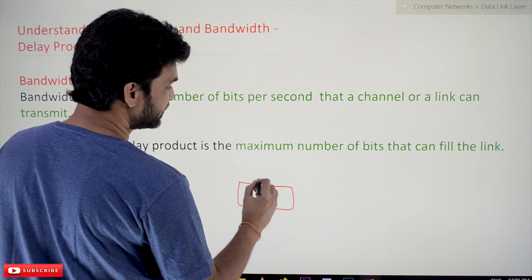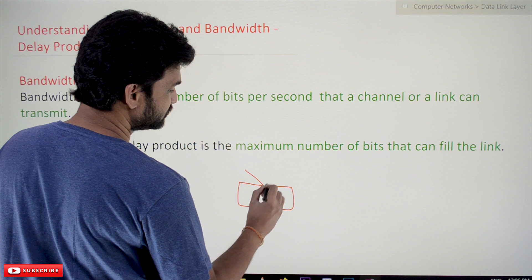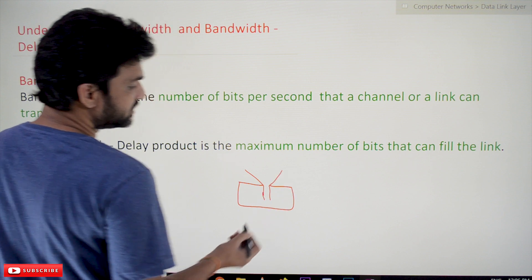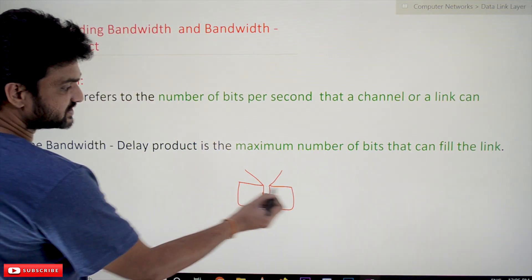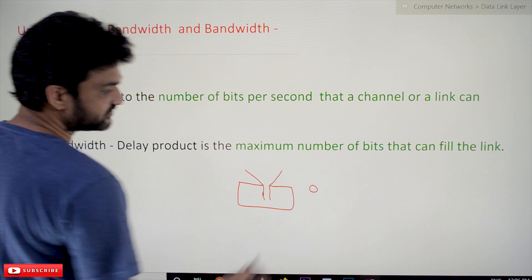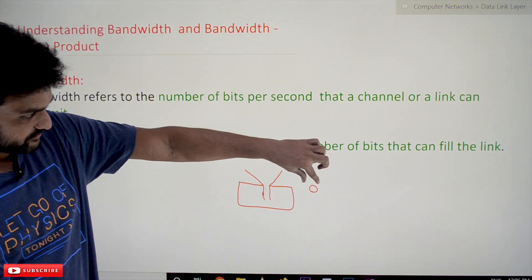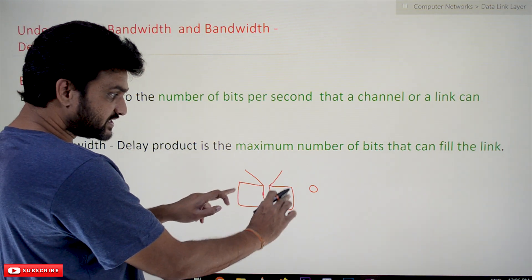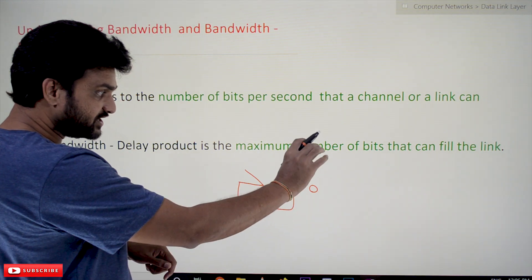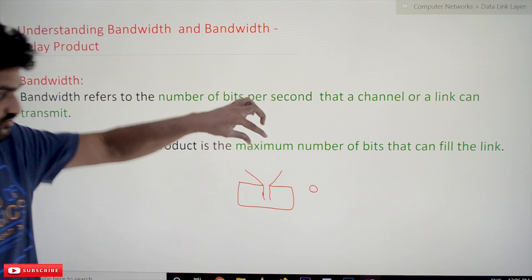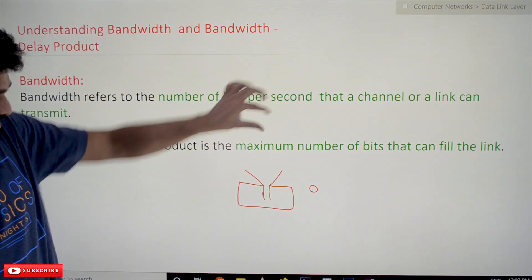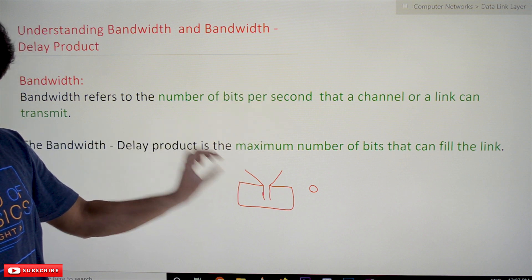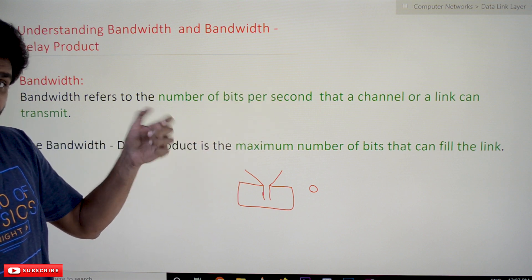For example, take a container and we want to fill this container using a funnel. This is the diameter of the funnel, and we want to pour water into the funnel to fill the container.